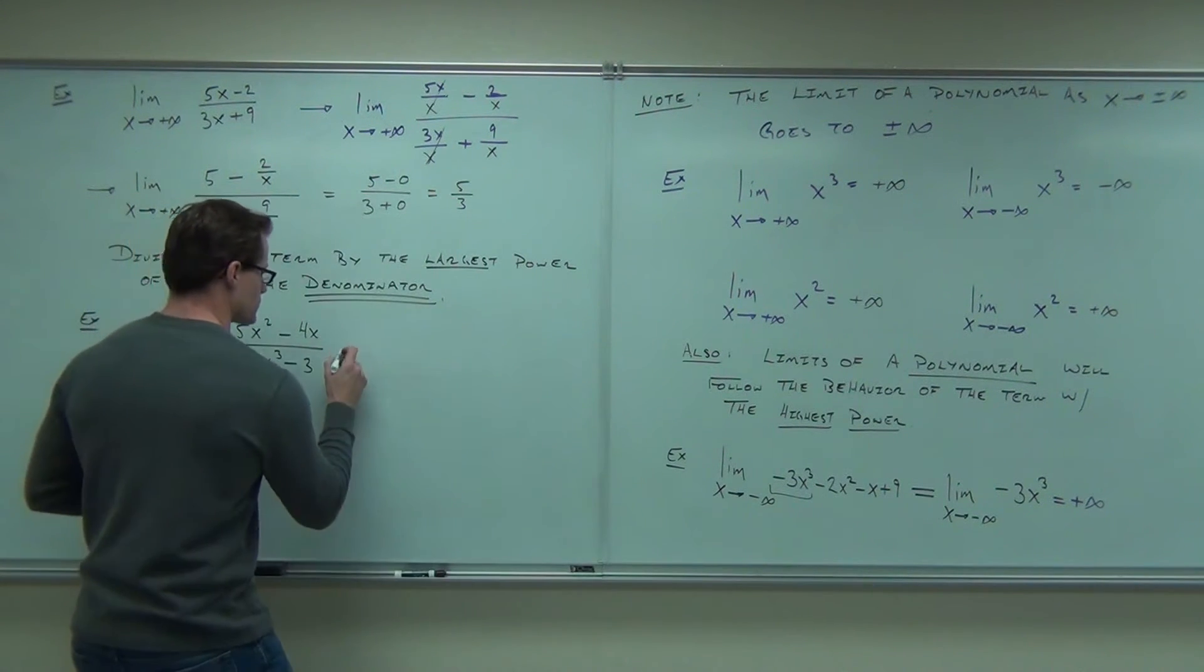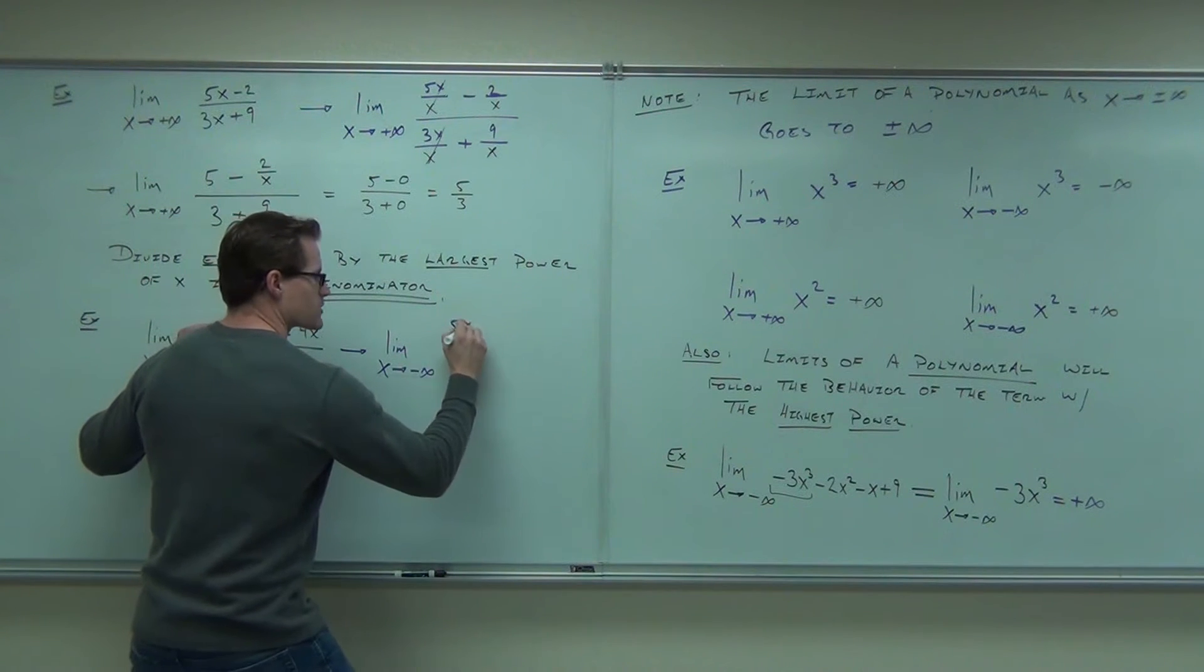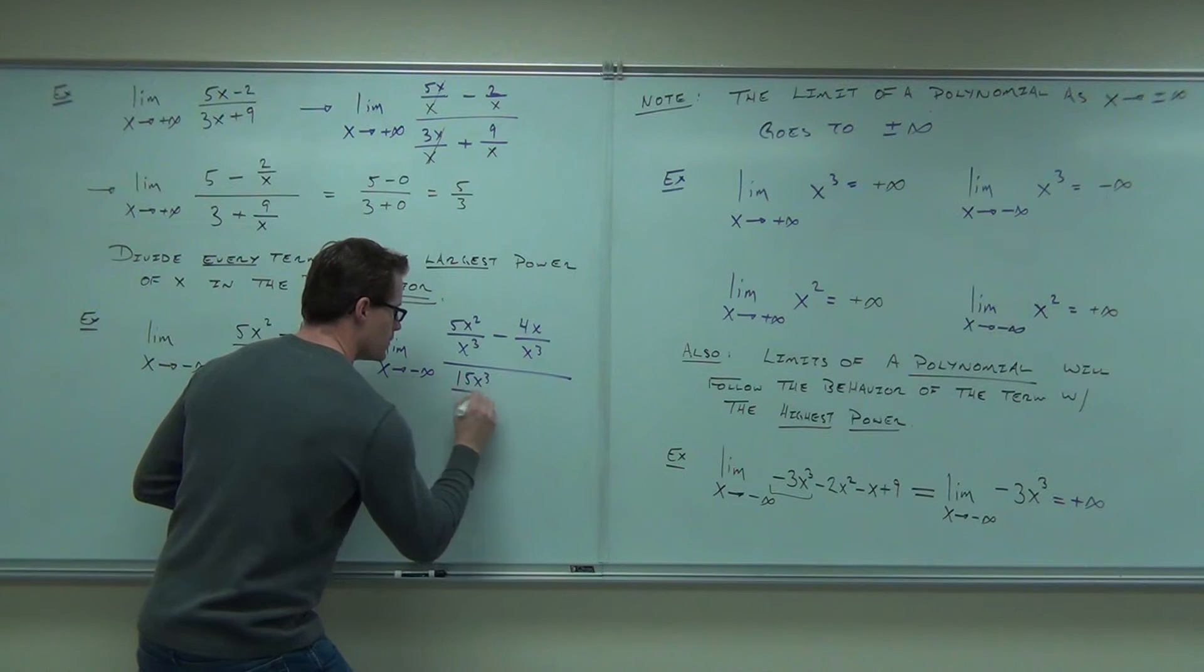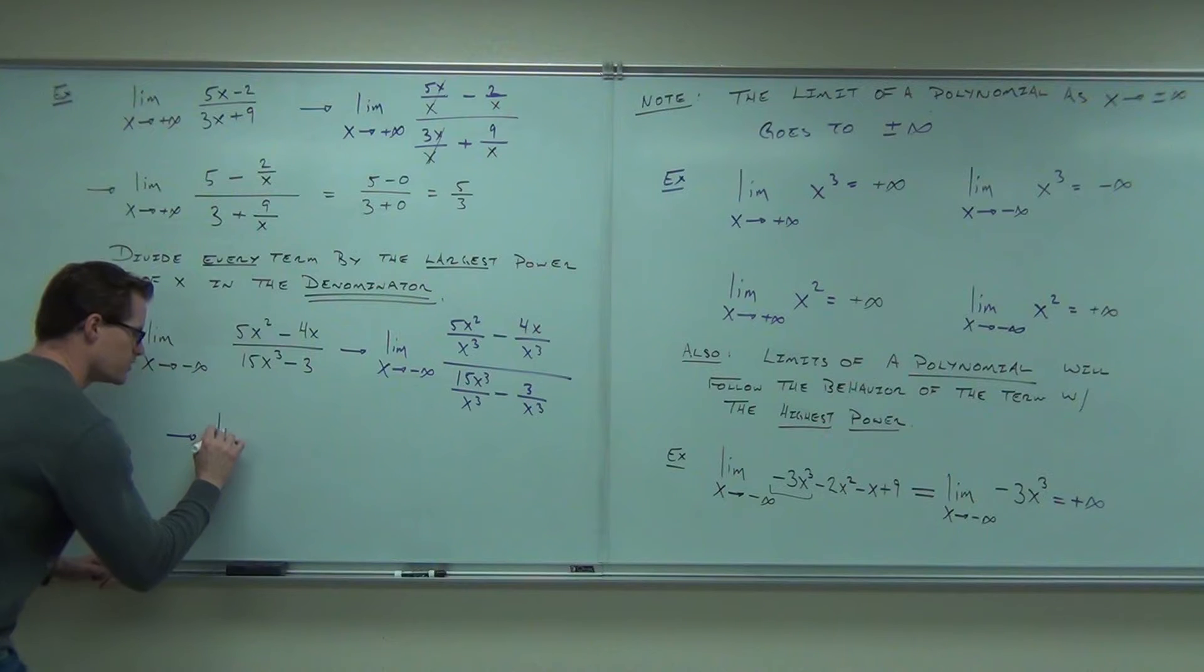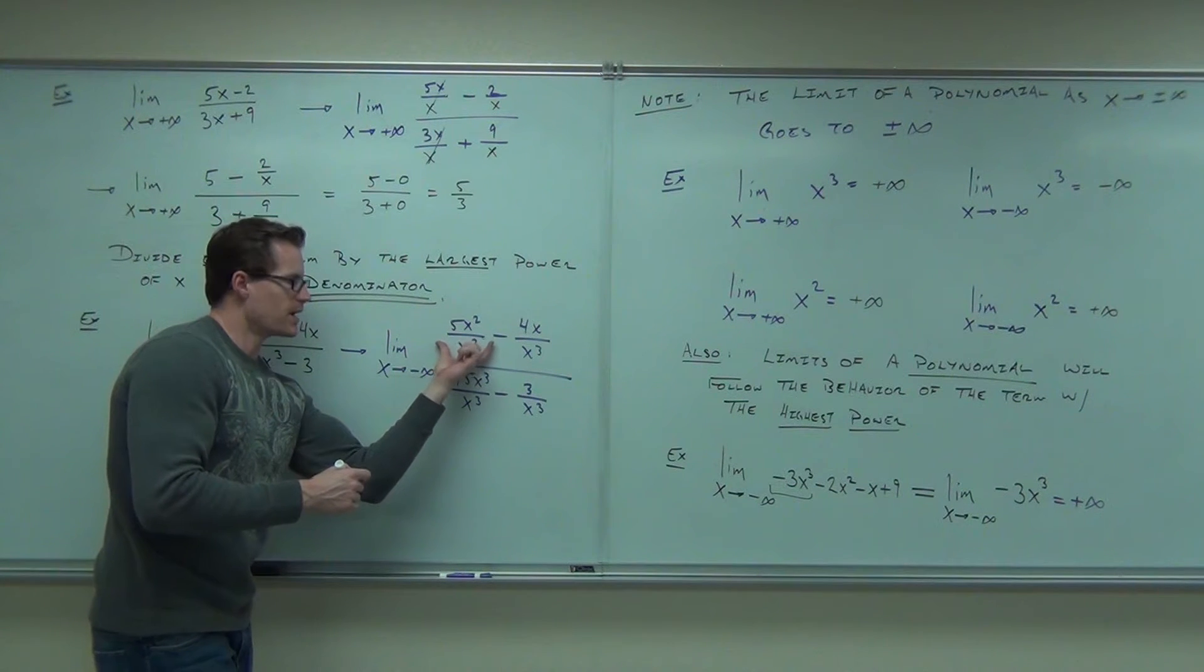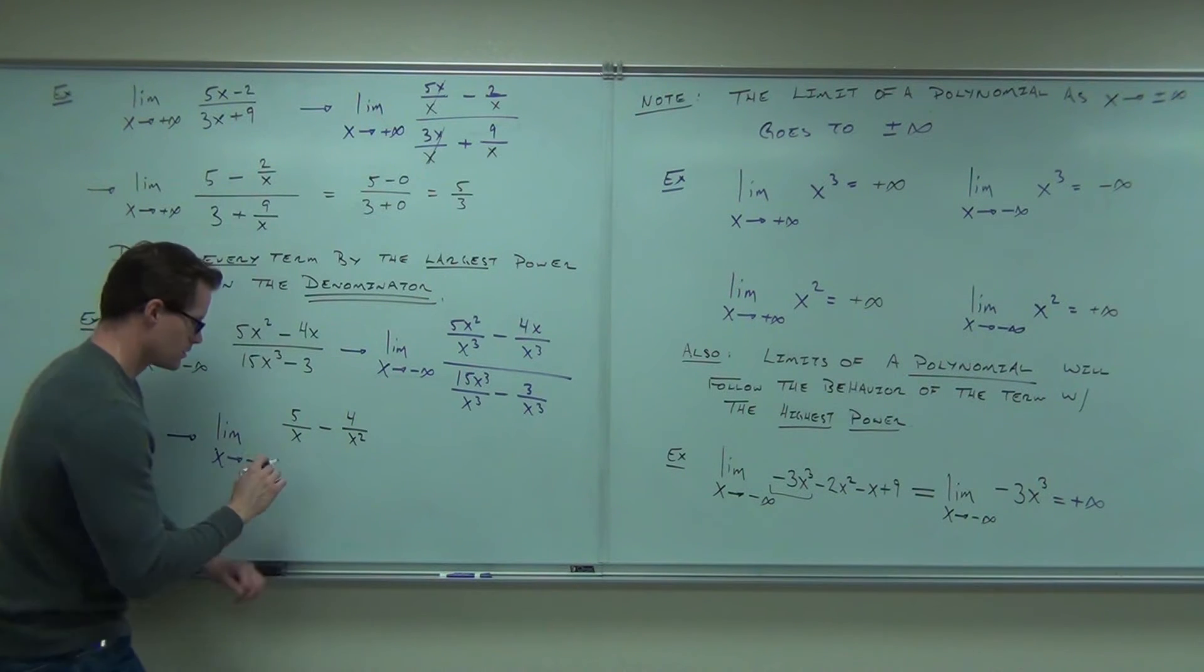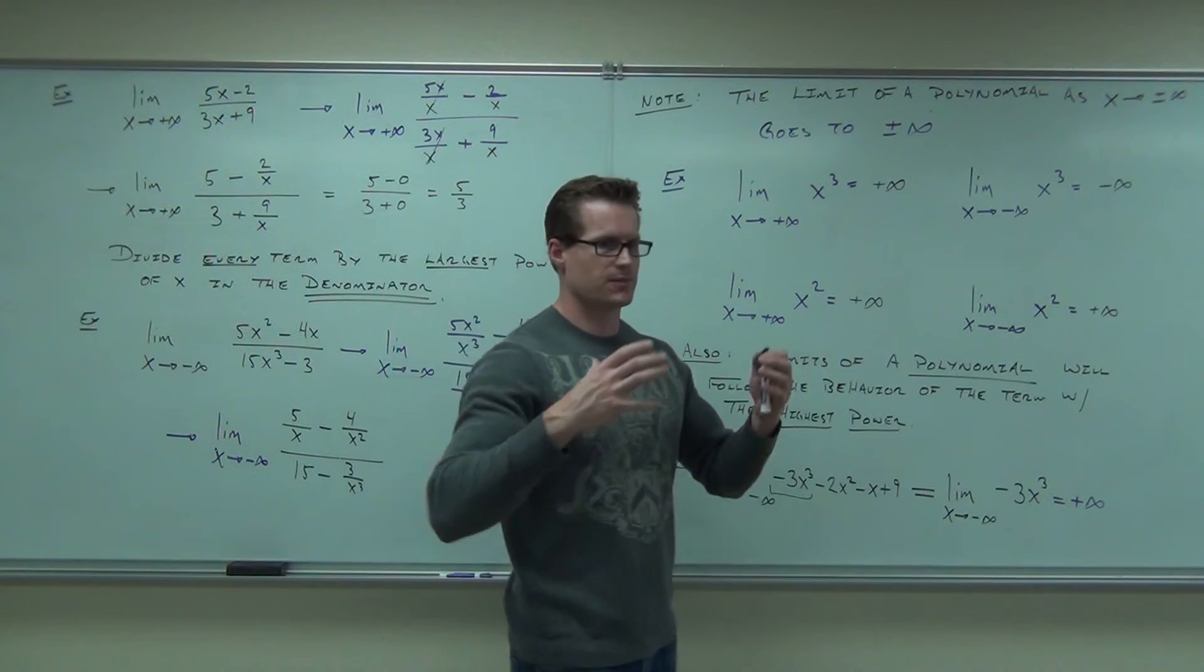So this would look just like this. You'd have 5x squared over x to the third, minus 4x over x to the third, all over everything is divided. Everything. 15x to the third over x to the third, minus 3 over x to the third. If we do just a little simplification, well, look what happens. Do you see how this power is still going to be 5 over x?